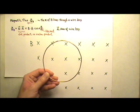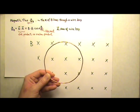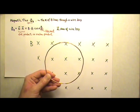This means that we may end with a positive flux or a negative flux, depending on which normal vector we choose, and that's okay.